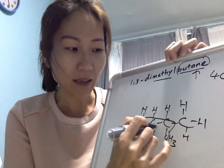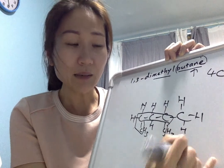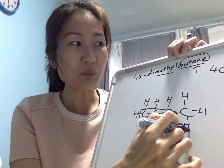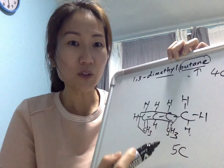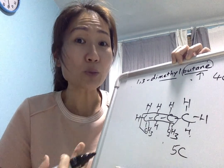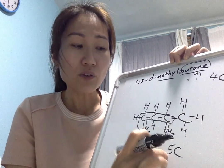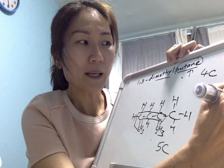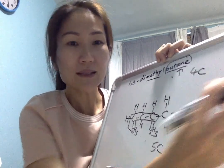Five carbon atoms. So this should not be the correct name for this structure. Okay, so let's try to give the correct IUPAC name for this structure. Five carbon atoms, so the suffix will end with pentane.